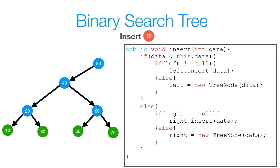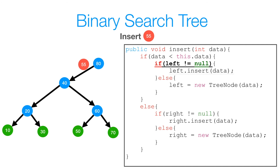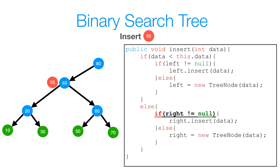Now let's take a look at the insert method. As we've seen, the approach is very similar to the search method. The first thing we do is check if our data is less than our current node's data — is 55 less than 80? Yes. So we check if our left is not null, because if left is null it means we're at a leaf node and have to insert at that point. Since left is not null, we call insert on 80's left subtree. Back at the start of the method: is 55 less than 40? No, so it goes in 40's right subtree. We go to our else and check if right is not null — again, if right were null we'd insert there. Since right is not null, we call insert on 40's right subtree.